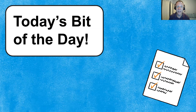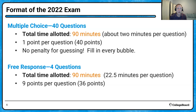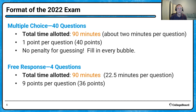So this is today's bit of the day — as Rob was mentioning, it'll give us a little information each day as we prepare for the exam, just to make sure there are no surprises when you walk in. Today's bit of the day is the format of the exam. As you may be familiar with already, the exam consists of two parts. There's a multiple-choice part, which is 40 questions. You'll have 90 minutes for that, which averages to about two minutes per question.